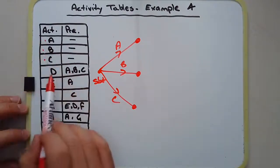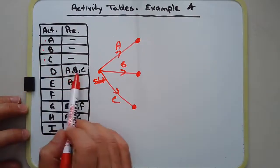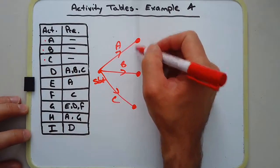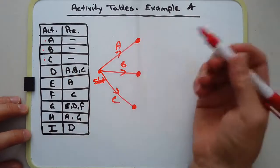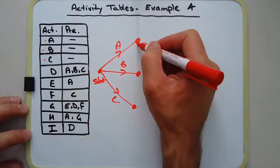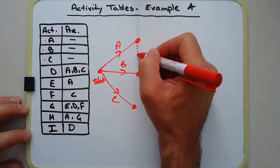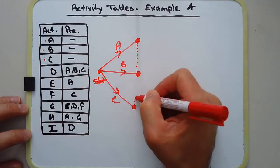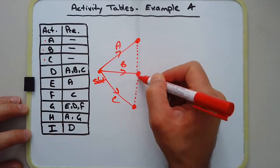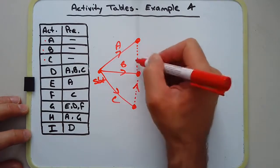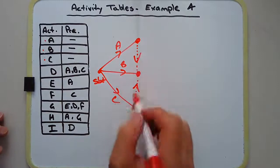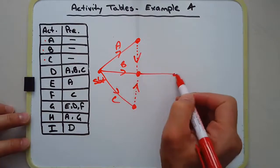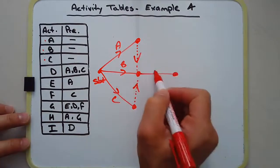Activity D depends on A, B, and C. So, to avoid multiple edges, we'll draw in our dummy activities.